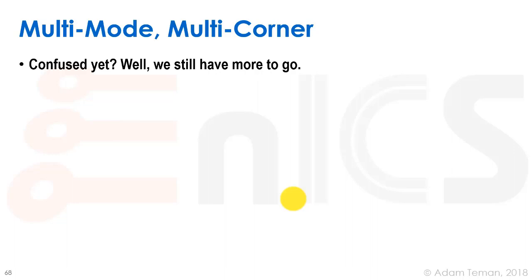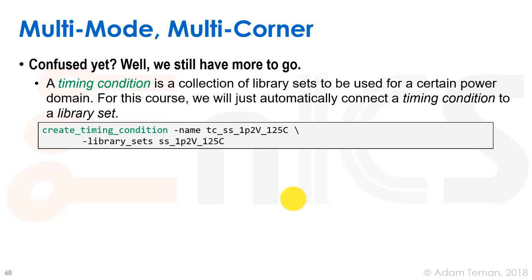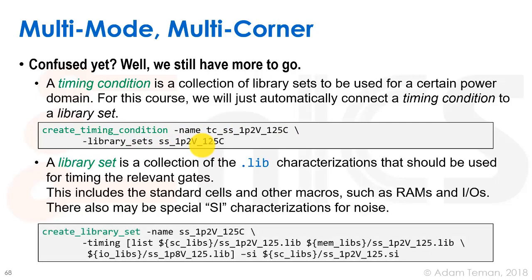A timing condition can apply to a certain power domain; in this course we'll keep a one-to-one connection between timing conditions and library sets. We write create_timing_condition with a name and connect it to a library set. The library set is a collection of the .lib files for the relevant gates — for example, create_library_set with -timing listing the standard cell lib for its corner, plus mem libs for SRAMs, io libs for IO cells, and optionally SI libs for signal integrity characterization.